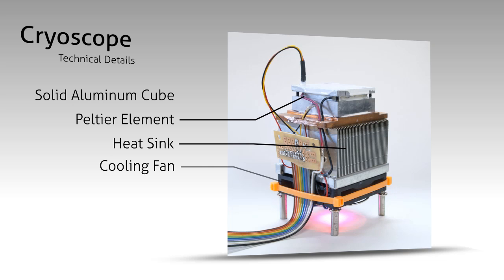An accompanying heat sink and cooling fan displace waste heat generated by the Peltier. An RGB LED serves as a visual indicator of the cube's current temperature.